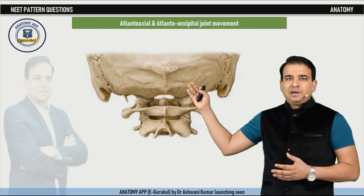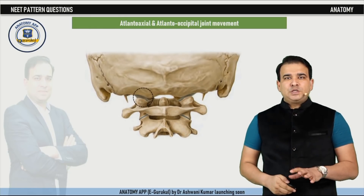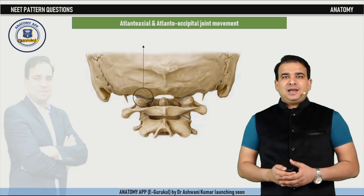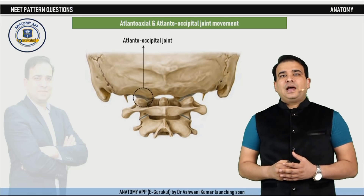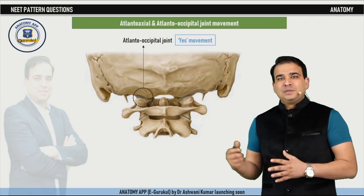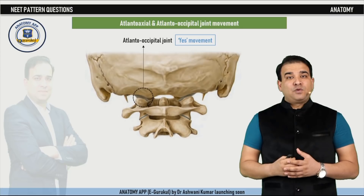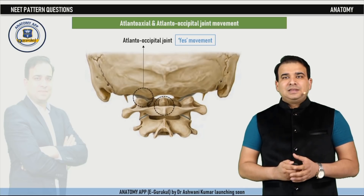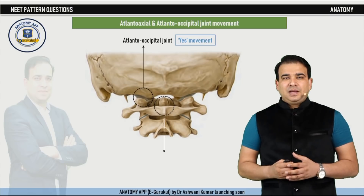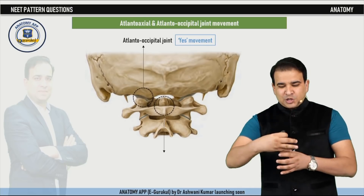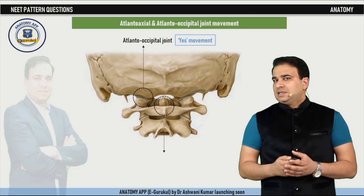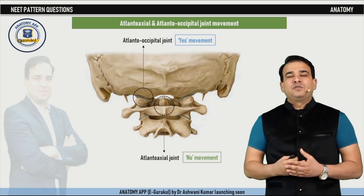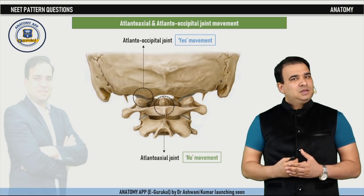This image shows the occipital bone, atlas, and axis vertebrae. The atlanto-occipital joint is an ellipsoid joint that allows side flexion and a slight nodding movement — the 'yes' movement. The atlanto-axial joint, formed between the atlas and the axis via the odontoid process of the second cervical vertebra, is a pivot joint that allows rotatory movement — specifically rotation of the atlas around the axis, producing the 'no' side-to-side movement. So: atlanto-occipital for the yes movement, atlanto-axial for the no movement.